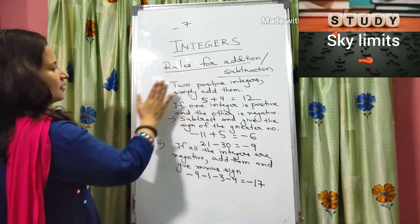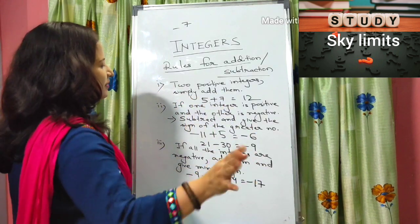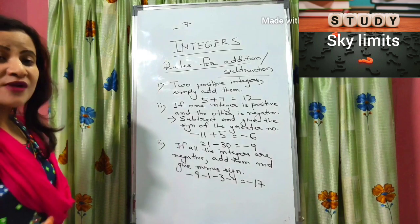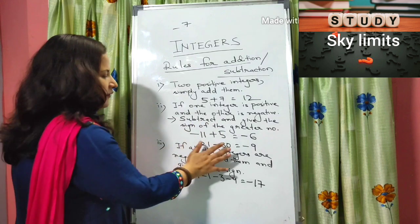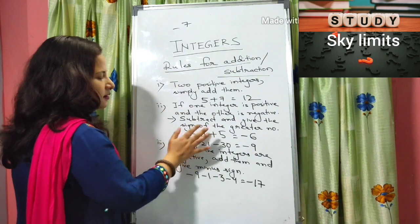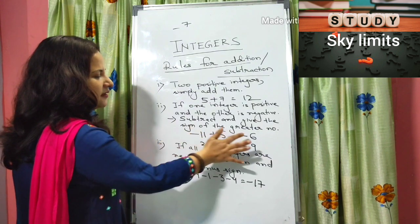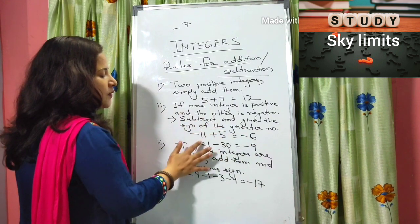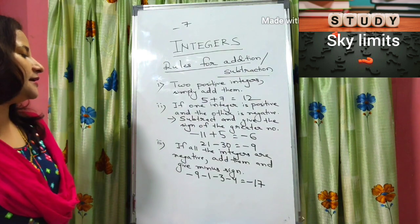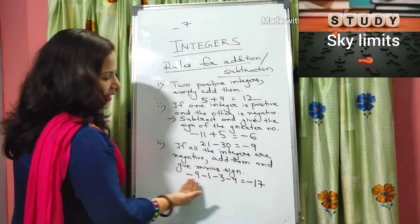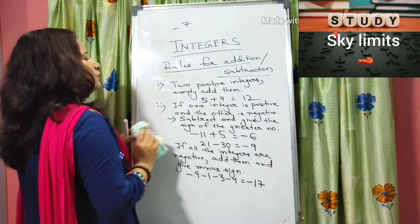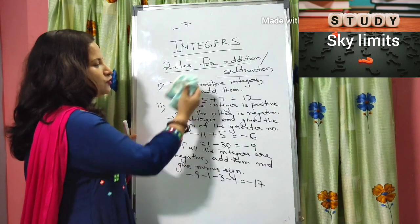Let's do a quick revision of all the rules. Rule one: if both integers are positive, simply add them. Rule two: if you have one negative and one positive integer, subtract and give the sign of the greater number — for example, 11 minus 5 is 6, and since 11 is greater and carries minus, the answer is minus 6; and 30 minus 21 is 9, with minus sign from 30. Rule three: if all integers are negative, add them and give a minus sign. Be clear with these rules before solving.